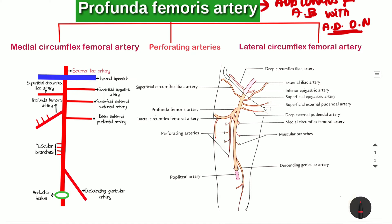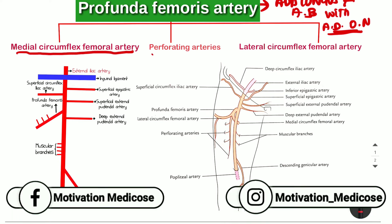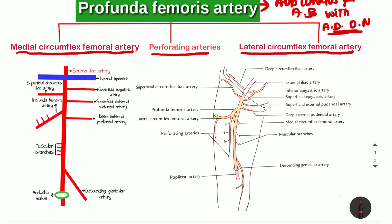The profunda femoris artery has three branches: the medial circumflex femoral artery, the perforating branches, and the lateral circumflex femoral artery. The medial and lateral circumflex femoral arteries give retinacular branches that supply the head and neck of the femur. The perforating arteries pierce the adductor brevis and adductor magnus muscles and supply the posterior compartment of the thigh.